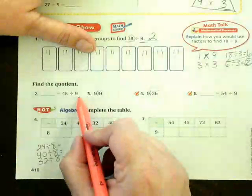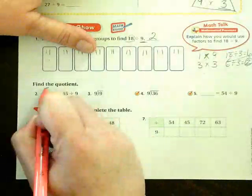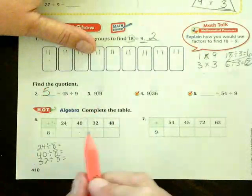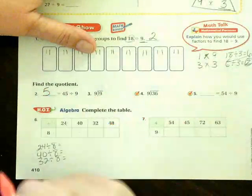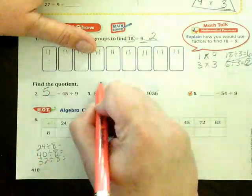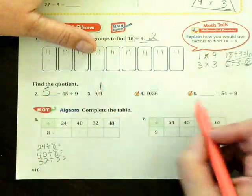45 divided by 9 equals 5, because 5 times 9 is 45. How about 9 divided by 9? Any number divided by itself is 1. That's a rule that we had to learn.